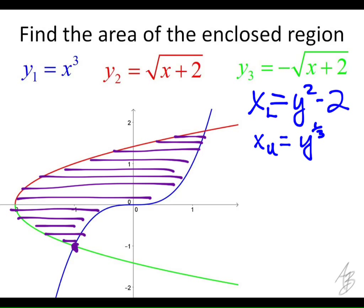The upper function is y to the one-third, the lower function is y squared minus 2. To find this area, it's going to be a fairly simple integral. This area is going to be the integral of the bigger function minus the smaller function: y to the one-third minus the quantity y squared minus 2, with respect to y. We do have a problem though. We need to find these limits. To find the limits, we need to find the intersection here and here, and we're looking for the y values in those intersections.